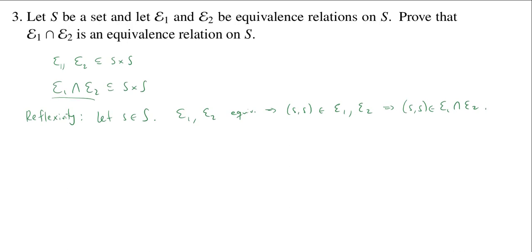So we get reflexivity. How about symmetry? For symmetry, we're going to let s and t be in the set S, such that (s,t) is in the intersection. Now we need to show that (t,s) is in the intersection. But since (s,t) is in the intersection, this implies that it's in E1 and it's in E2.